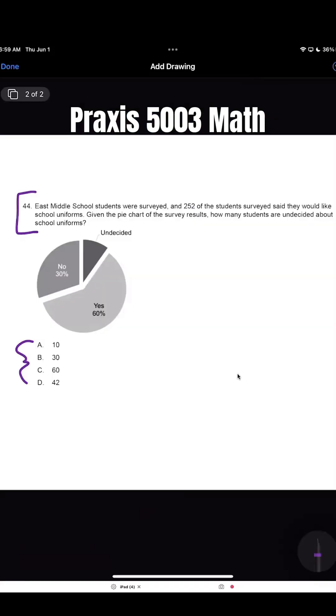Good morning. Let's do some math. East Middle School students were surveyed and 252 of the students surveyed said they would like school uniforms. Given the pie chart of the results, how many students were undecided about school uniforms?